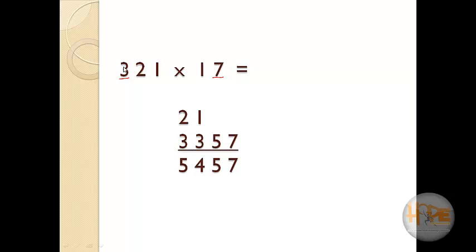So 3 into 7 is equal to 21 plus 2 is equal to 23. So put 3 here and carry forward 2. Then 2 into 7 is equal to 14, and 14 plus 1 is equal to 15. So put 5 here and carry forward 1.